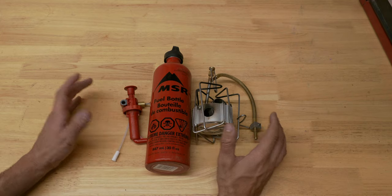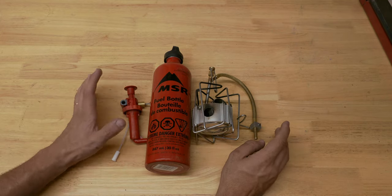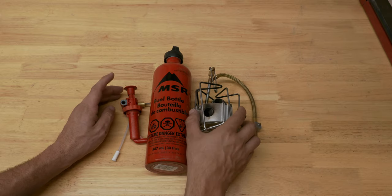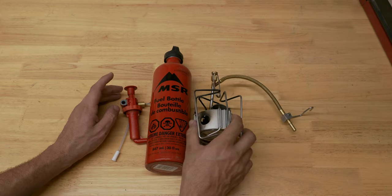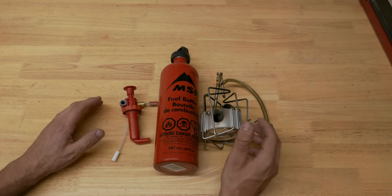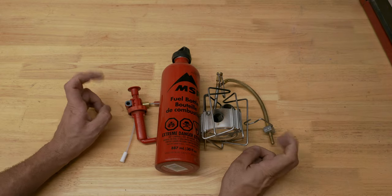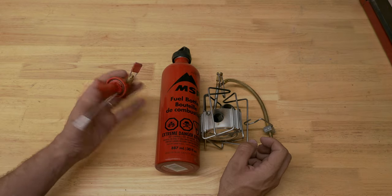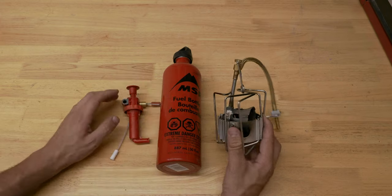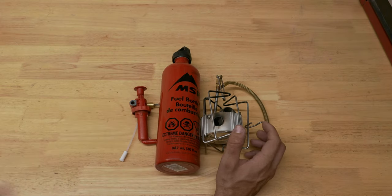All right, here it is, your standard MSR Dragonfly kit. With the exception of two things. One, what I don't have here on the table is the windscreen that goes around this. It's basically like really thick tinfoil. Kind of nice. And the other thing I don't have is the seal kit slash maintenance kit.